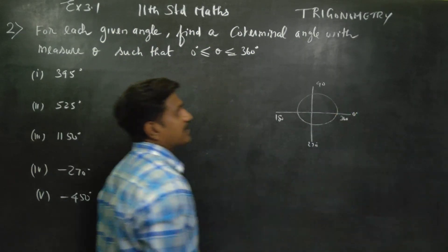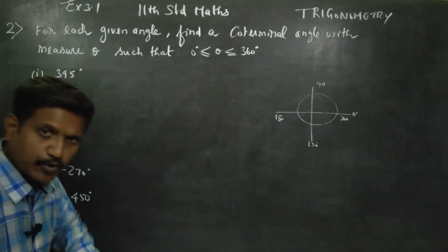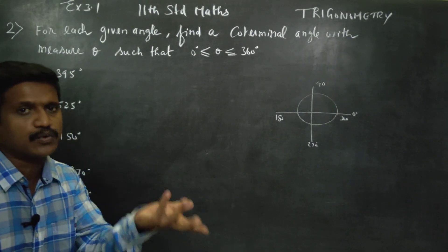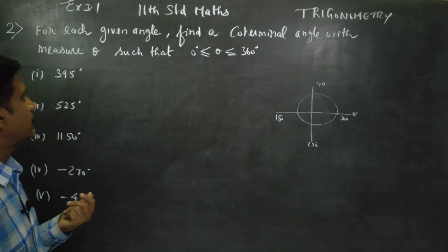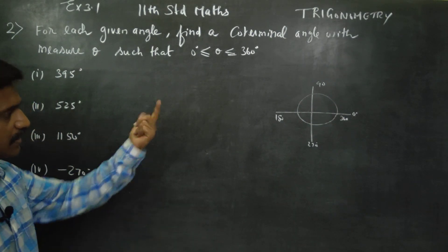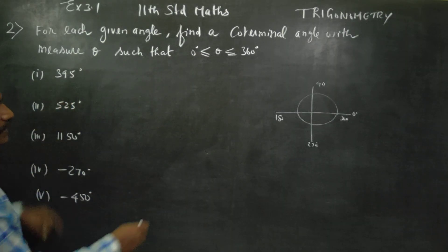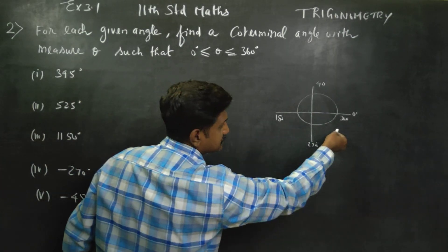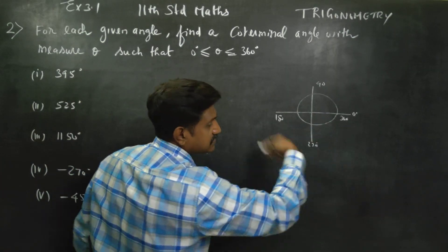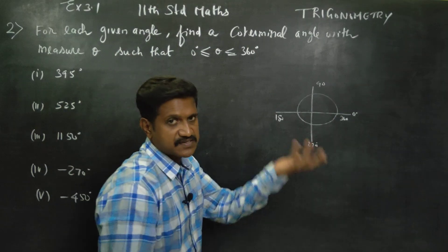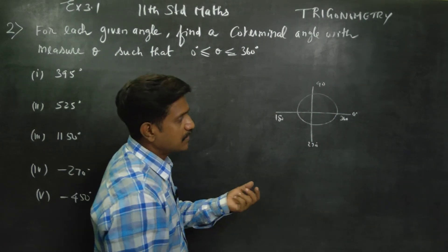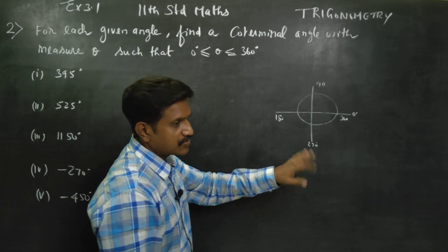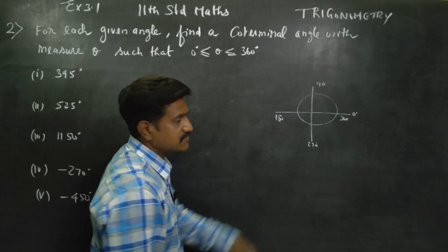Now, you are going to get a co-terminal angle. For a negative angle, you go the opposite side. If the angle has extra minus 360, you remove 360. If it is negative, you have to just add 360.